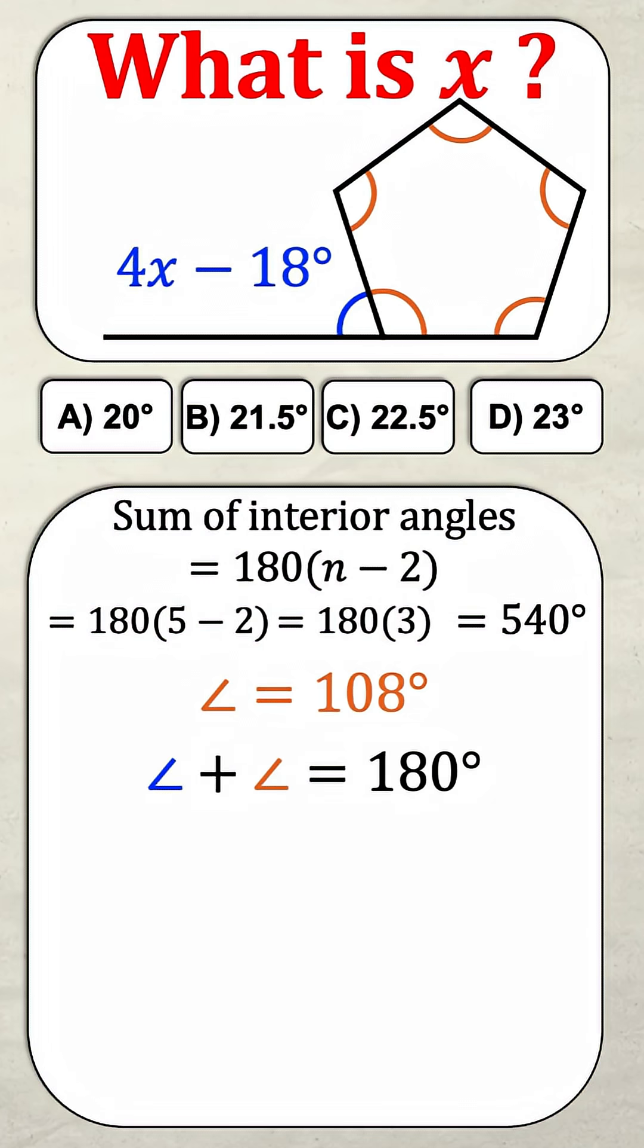So now I can just substitute them into an equation. I have the blue angle 4x minus 18 degrees plus the orange angle 108 degrees equals 180 degrees.